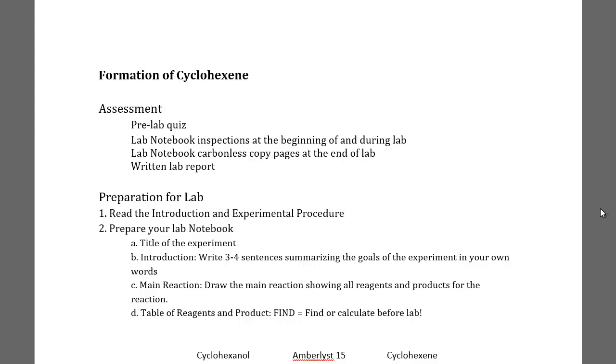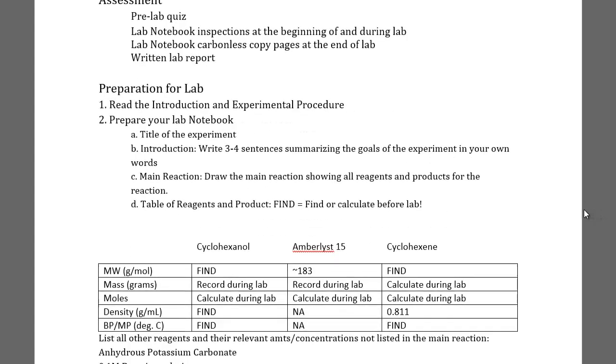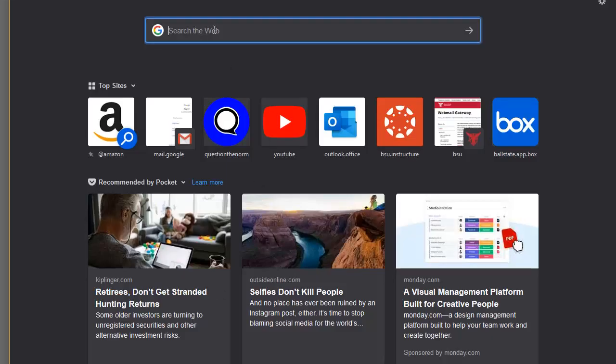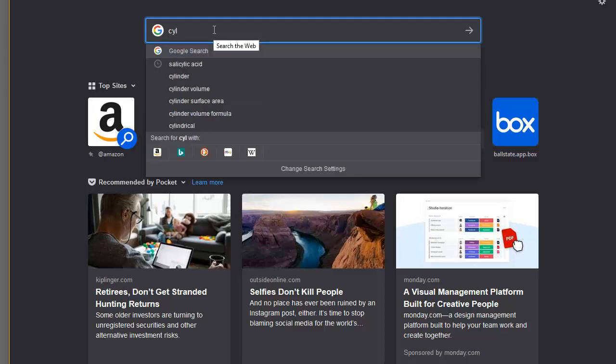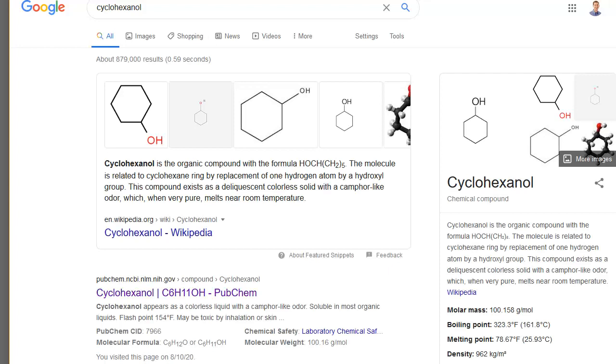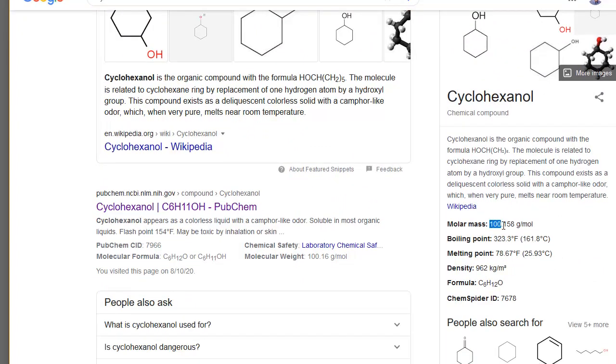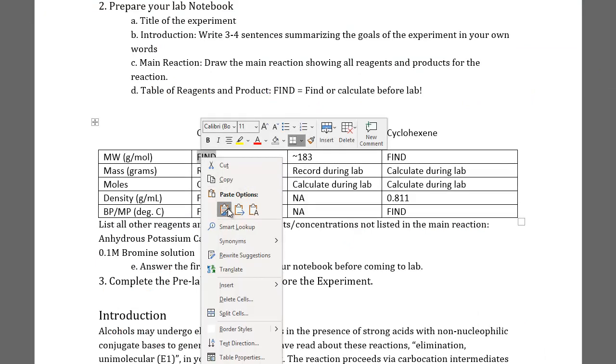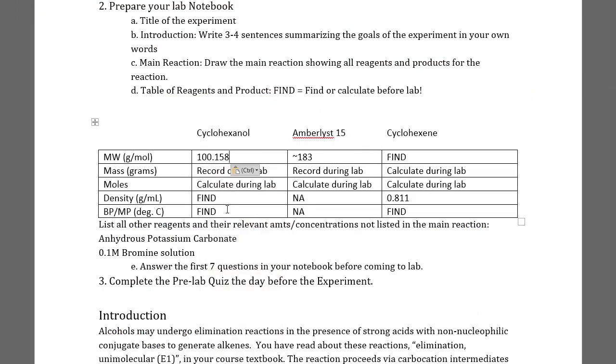Welcome to part one of the formation of cyclohexene experiment. To get started, we're going to look at the table of reagents. Looking at the molecular weight for cyclohexanol, you're pretty comfortable with this by now. I'm going to go ahead and just type in cyclohexanol here. It looks like from the search results we've got the Wikipedia results with cyclohexanol giving us the molar mass.